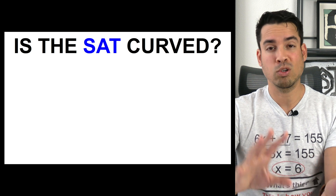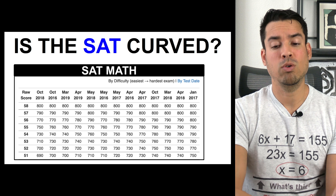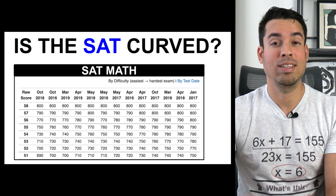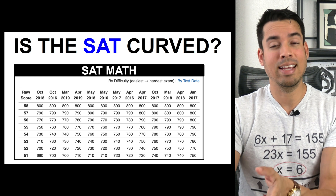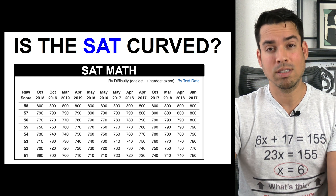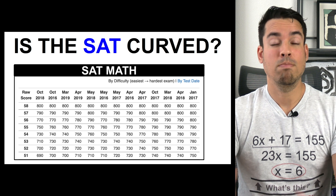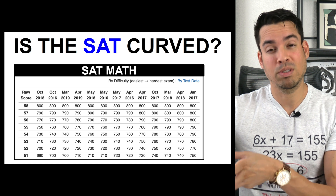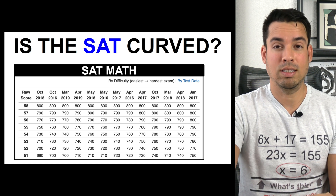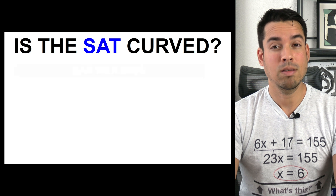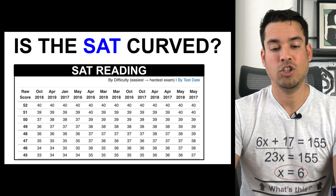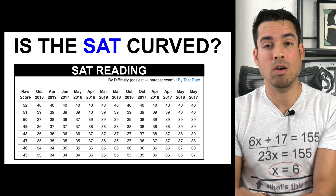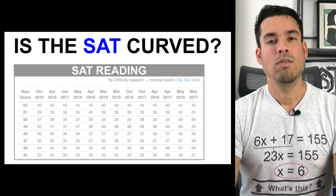Let me show some data on how test difficulty is dispersed throughout the months. For the math section, difficulty ranges from easiest to hardest — on the harder end, the curves are actually the nicest. For example, the March 2018 exam was one of the hardest tests administered, while March 2019 was on the easier side. The point is it's difficult to associate a particular test date with test difficulty. We see something similar with the SAT Reading section — dates are spread across and there's no real pattern.